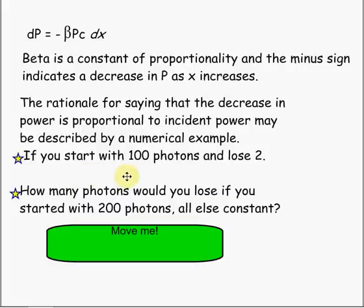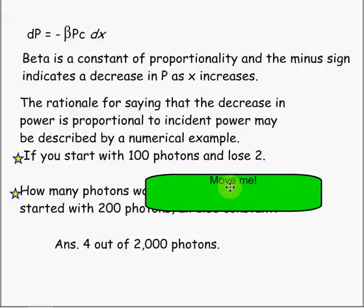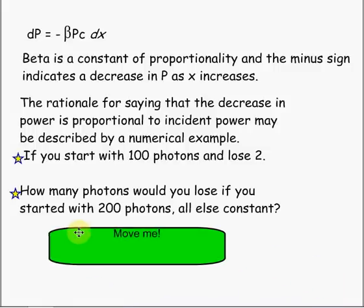If you start off with 100 incident photons and lose 2, how many photons would you lose if you started off with 200 photons and everything else is constant? You have twice as many photons to begin with, so you'll absorb twice as many photons at the end. You start off with 100, you lost 2 — so the fraction is 2/100. With 200 photons, you lose 4. That's supposed to be 200, not 2,000.